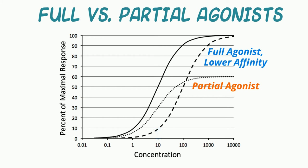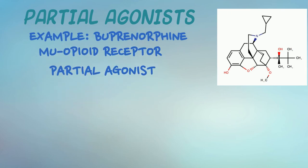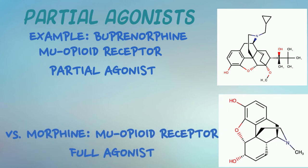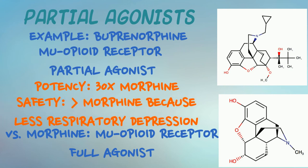A classical example of a partial agonist is buprenorphine, a mu opioid partial agonist. Its activity is compared with morphine, a pure mu agonist. However, buprenorphine is about 30 times more potent than morphine because it binds to the receptor with higher affinity. The clinical benefit of a partial agonist would be associated with the safety or the ceiling of its effect — in other words, the Emax — because it's lower than that normally causing the adverse effects of respiratory depression with opioid drugs.